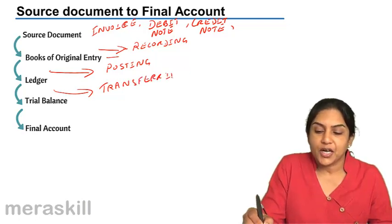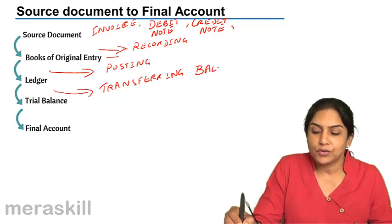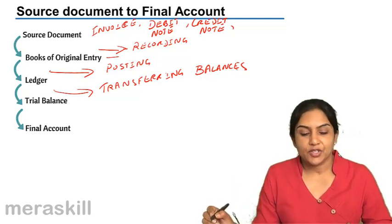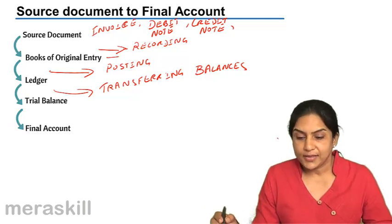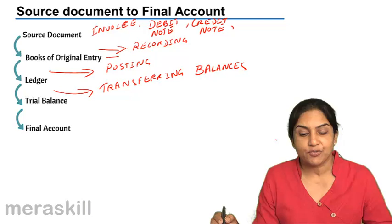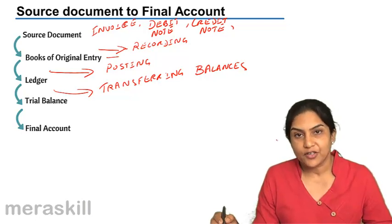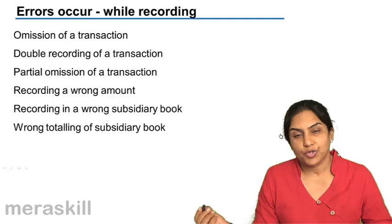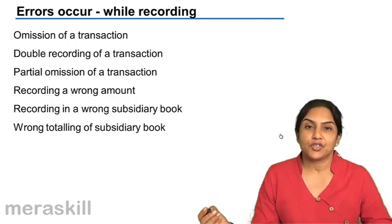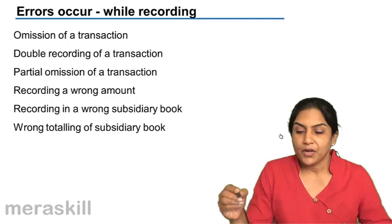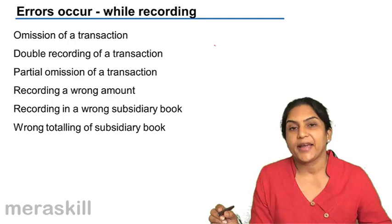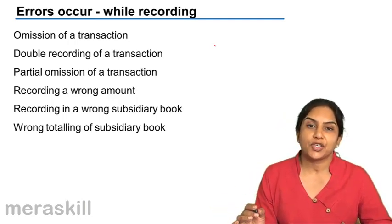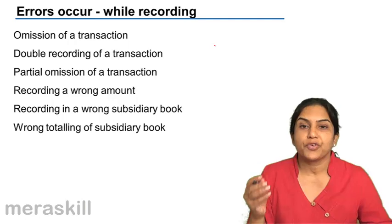Transferring balances from the ledger account to the trial balance is another stage where errors can occur. While recording, one type of error is the omission of a transaction — for example, an entire purchase transaction is not recorded at all. We received an invoice for a purchase from X for 10,000 rupees, but it is totally not recorded.